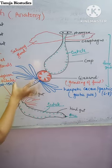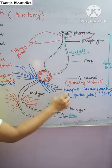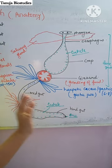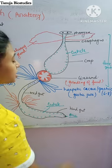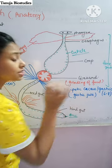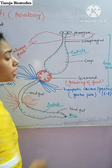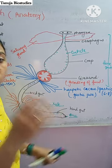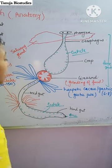At the junction of foregut and midgut, hepatic caeca are present, which are also called gastric caeca. They release gastric juice — approximately six to eight in number — and they help in digestion.